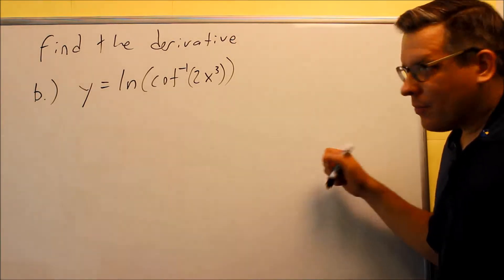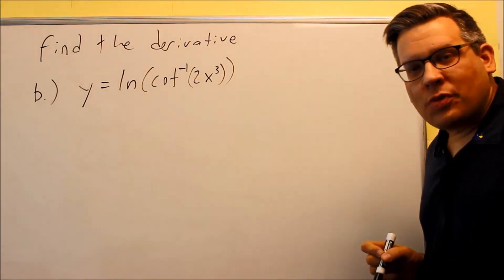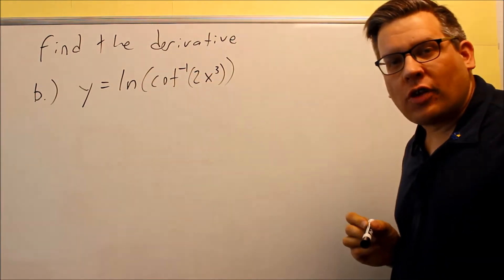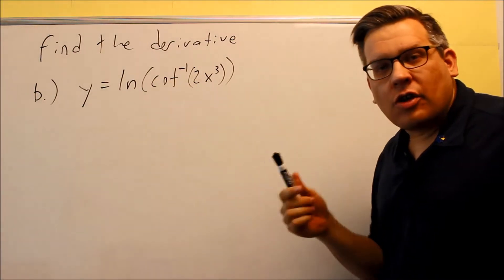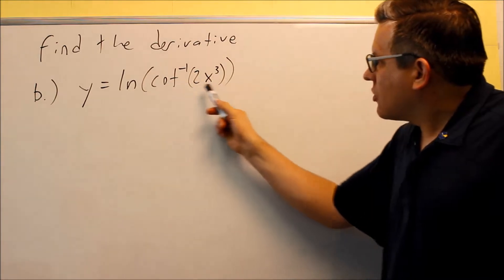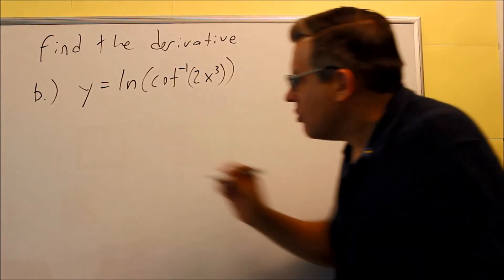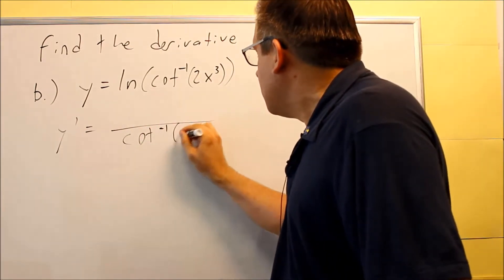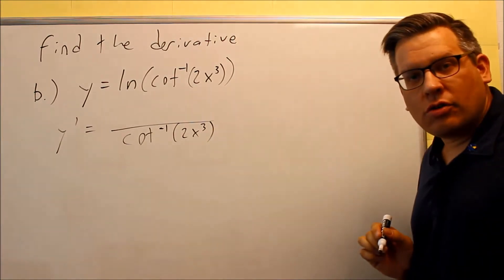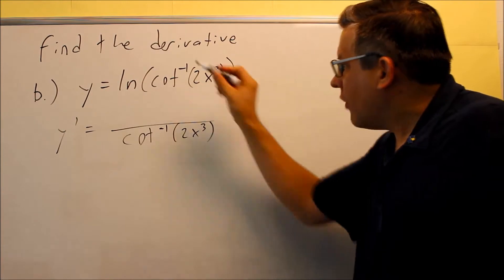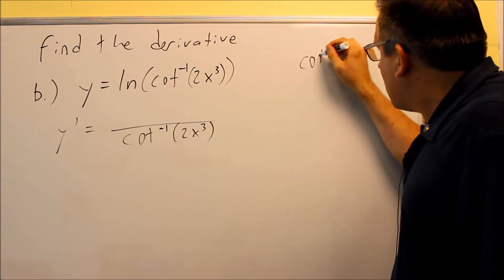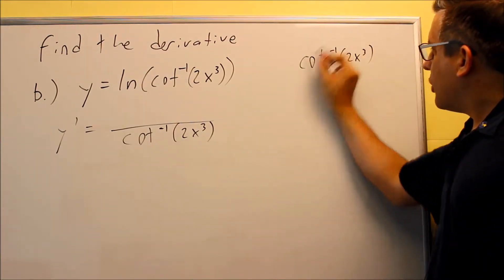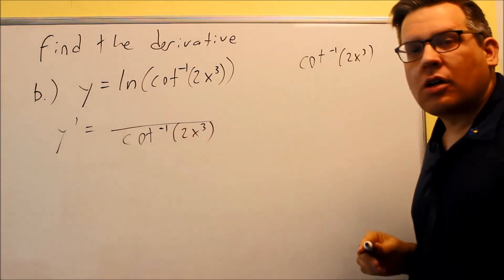For part b, we have a natural log out front, which means we need the formula for the derivative of natural log of u, which is u prime over u. In this case, the entire expression inside the natural log is our u. When we apply this formula, we put the inverse cotangent on the bottom because that's our u. On top, we have to take the derivative of the inside, and we'll work that out to the side because it requires a separate formula.